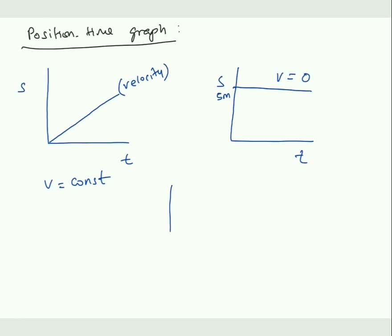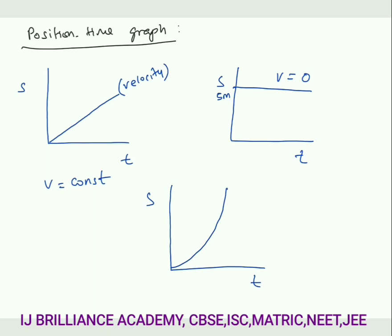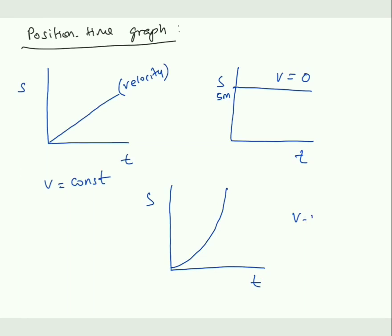Let me draw another graph. In this case you have a graph like this. Again the slope represents velocity, but what about the velocity? Velocity in this case keeps on increasing as the motion progresses.